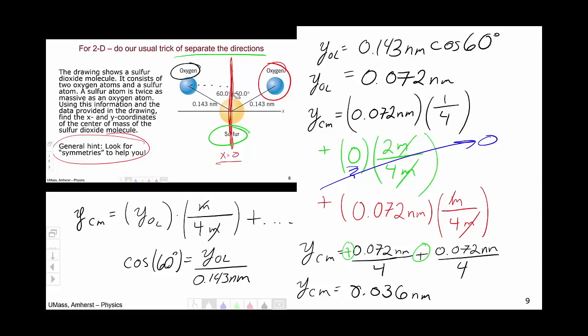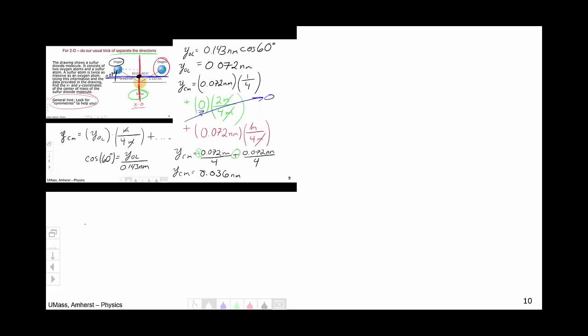Which if we come up here and try to draw on our picture, we know that this is 0.072. 0.036 is roughly half of that. So our center of mass is going to be somewhere along this y line. And the spot where the two cross is where our center of mass is going to be.